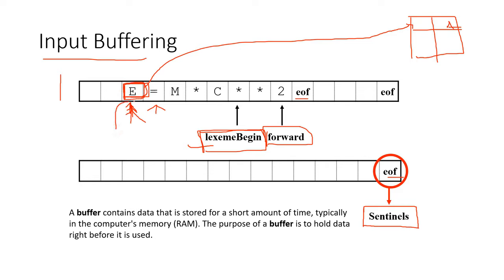Now this equals to is where the lexeme begin pointer is, and also the forward pointer is here. We need to check for this one also. This is an equals to, we know this is an operator - it can be less than equals to, greater than equals to, not equals to, or double equals to.